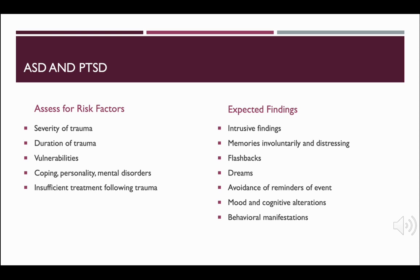For acute stress disorder and PTSD, we assess the following risk factors. We ask: what was the severity of the trauma, how long did it last, and what was the amount of personal threat? Was it at home, on vacation, at school? Was the setting familiar? We assess vulnerability — the individual's resiliency, how they cope, their personality, any pre-existing mental health disorders, whether they got help after the event, and their social and family support, as well as cultural influences and societal attitudes about mental health treatment.